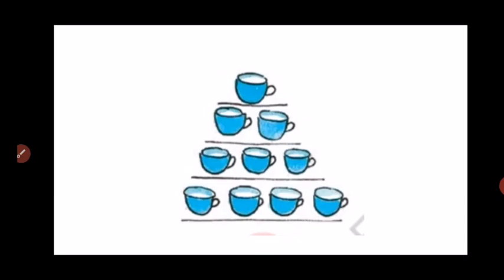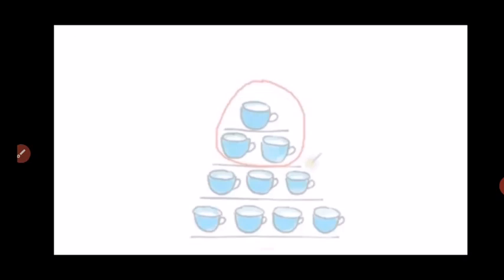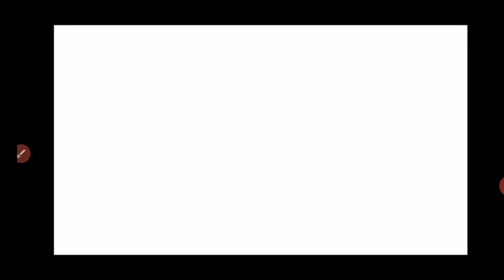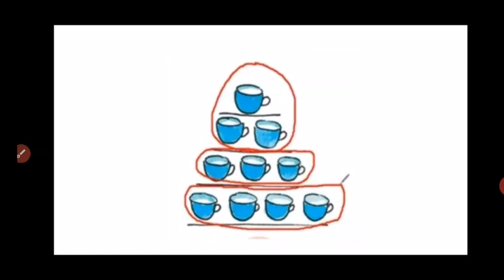In the second line, there are two cups. In the third line, there are three cups. And in the fourth line, there are four cups. So if we make a group of these three cups and make a group of another three cups and the last group that is of four cups, then total, how many groups we get of these cups?